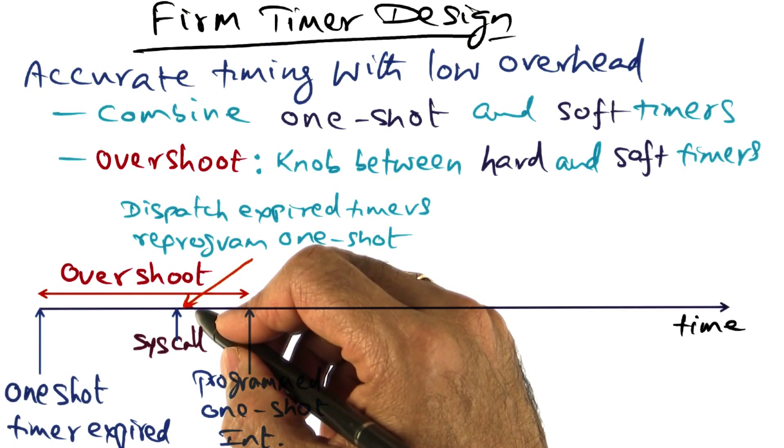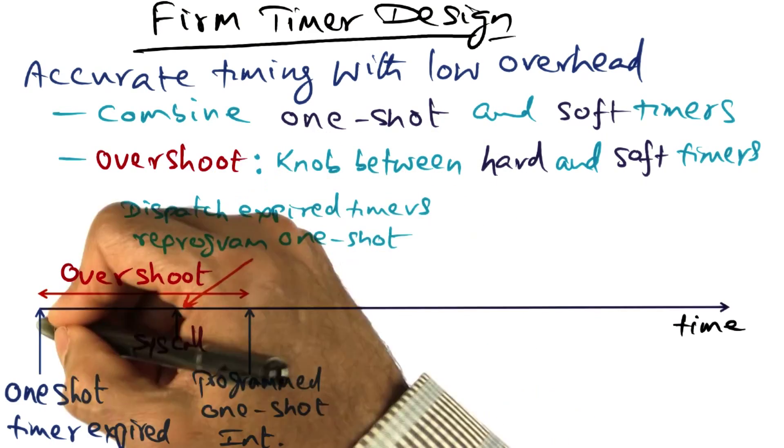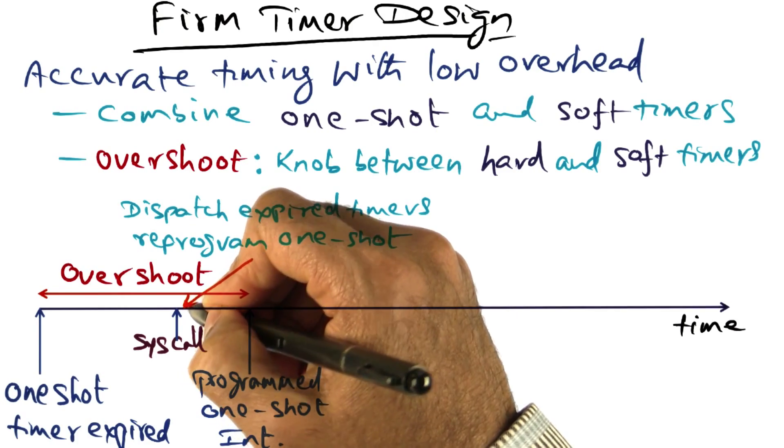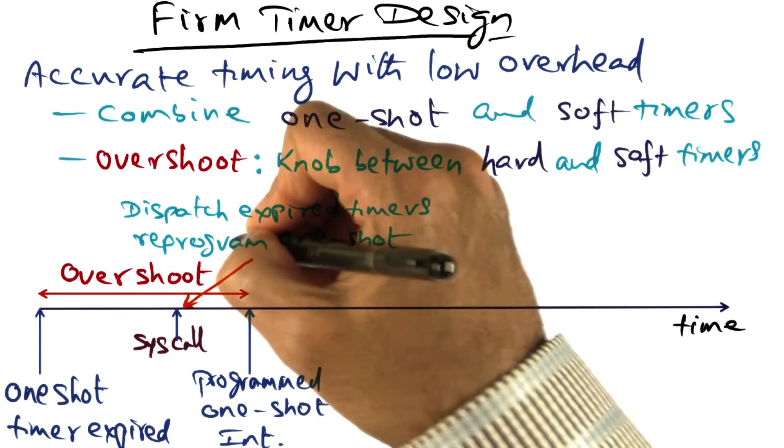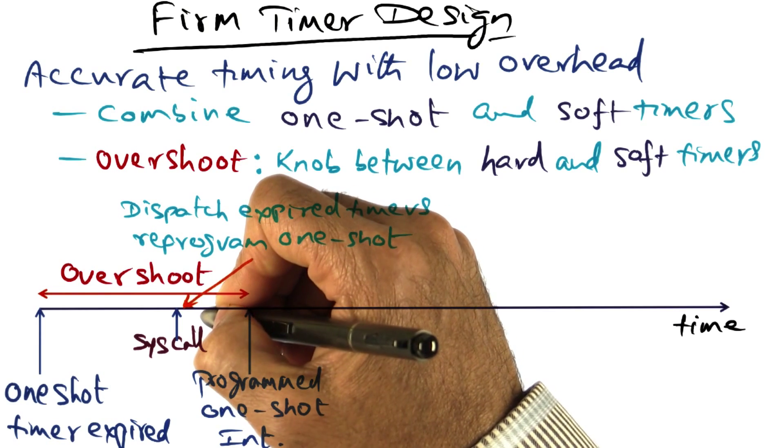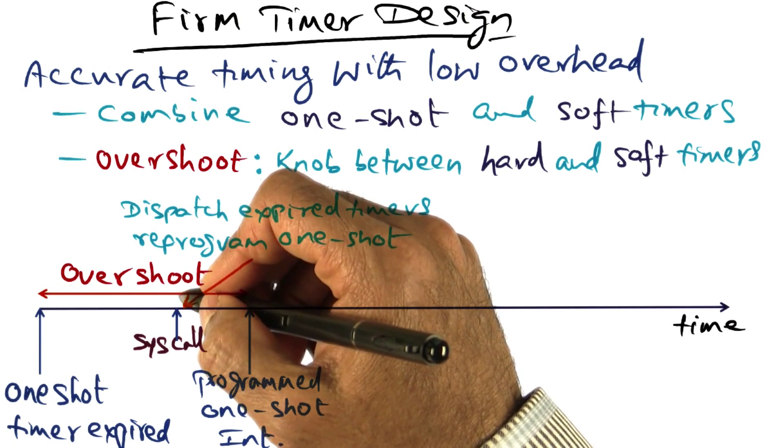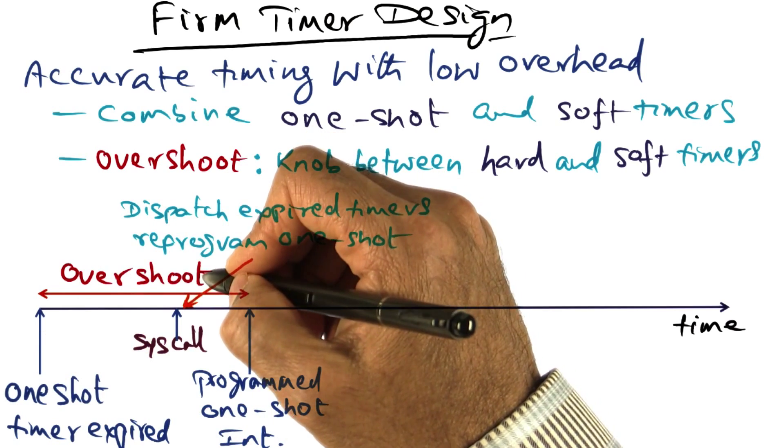So what we could do now is dispatch the expired timers at this point of time. And also, we will reprogram the one shot timer that expired for the next time that we need the one shot timer to interrupt.